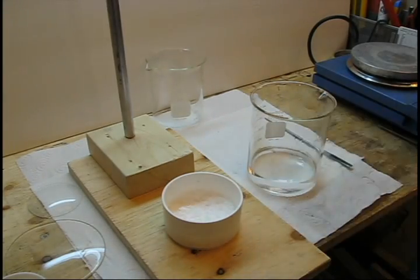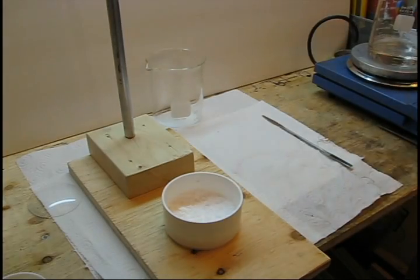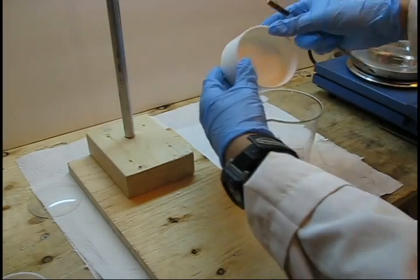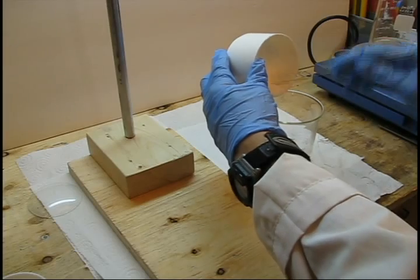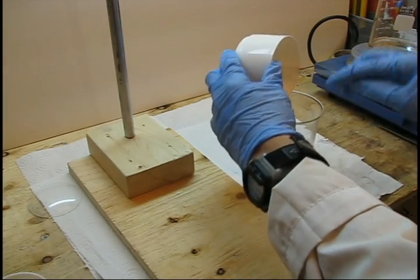To purify this powder, we will recrystallize the acetylsalicylic acid using isopropanol. Transfer the powder to a beaker and begin heating up approximately 200 to 300 milliliters of isopropyl alcohol in another beaker.